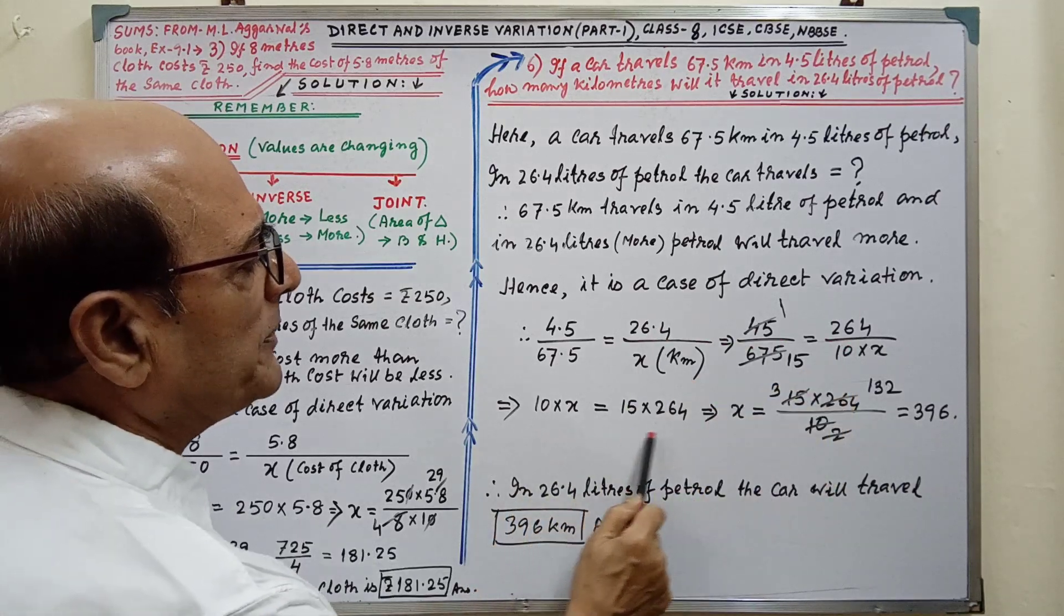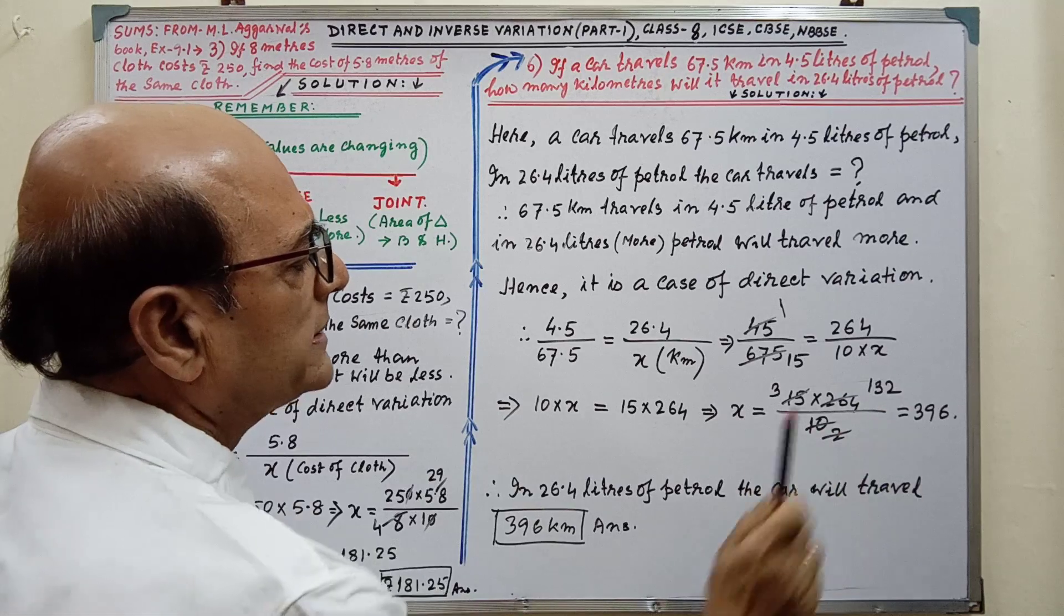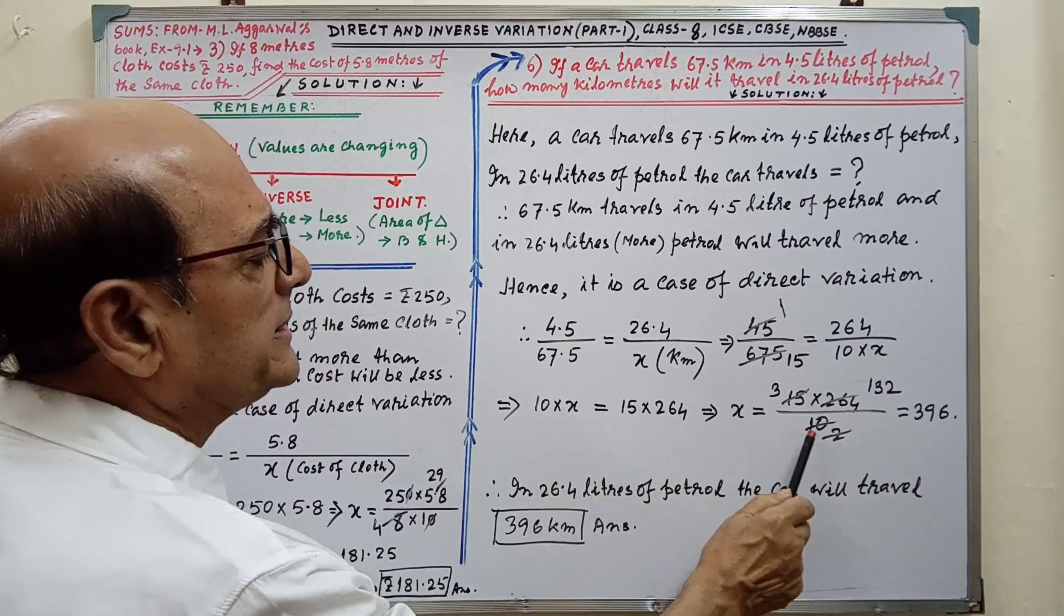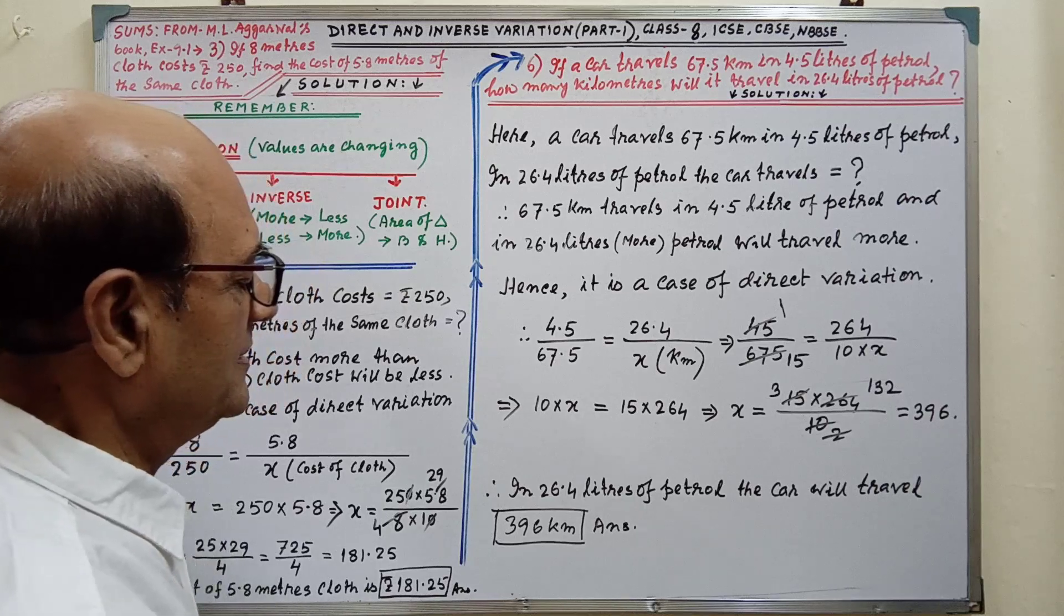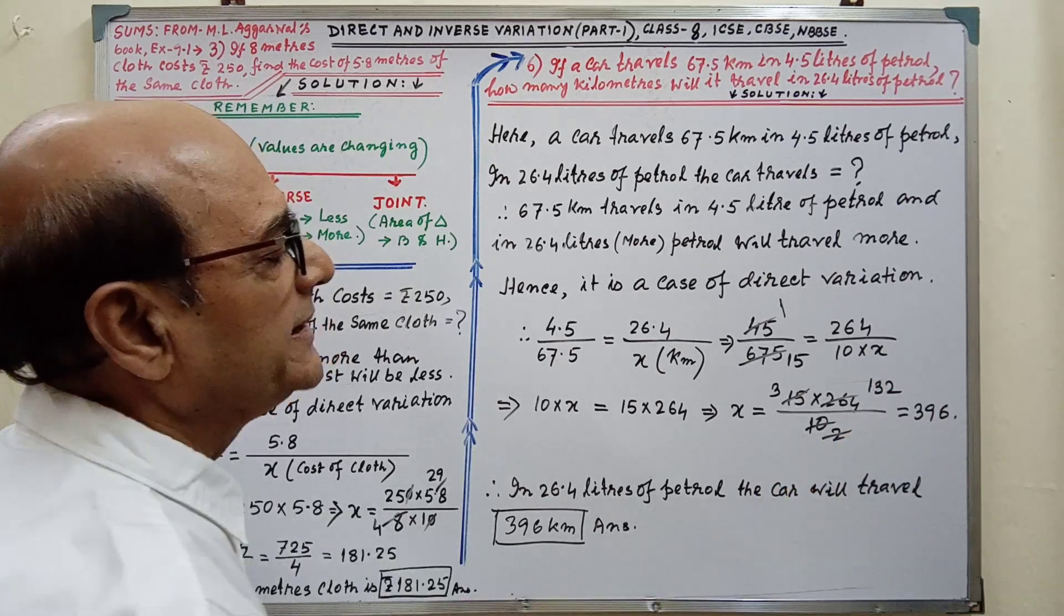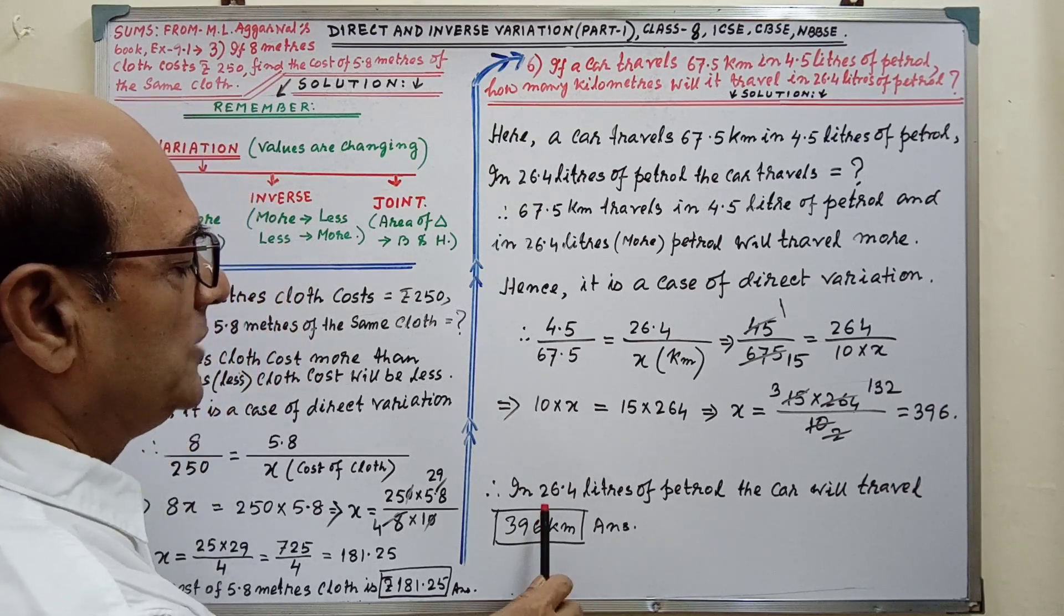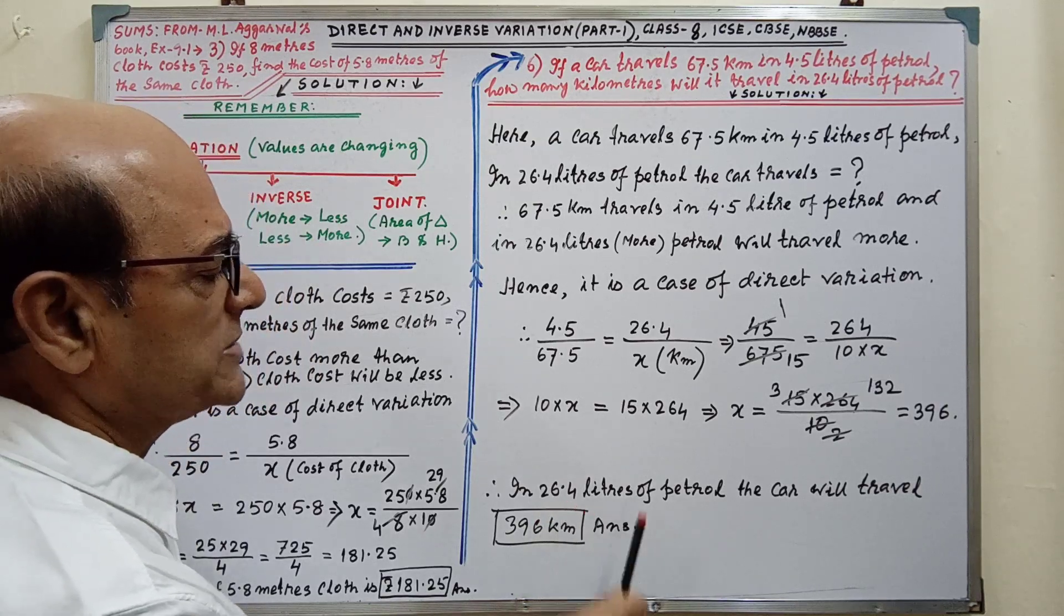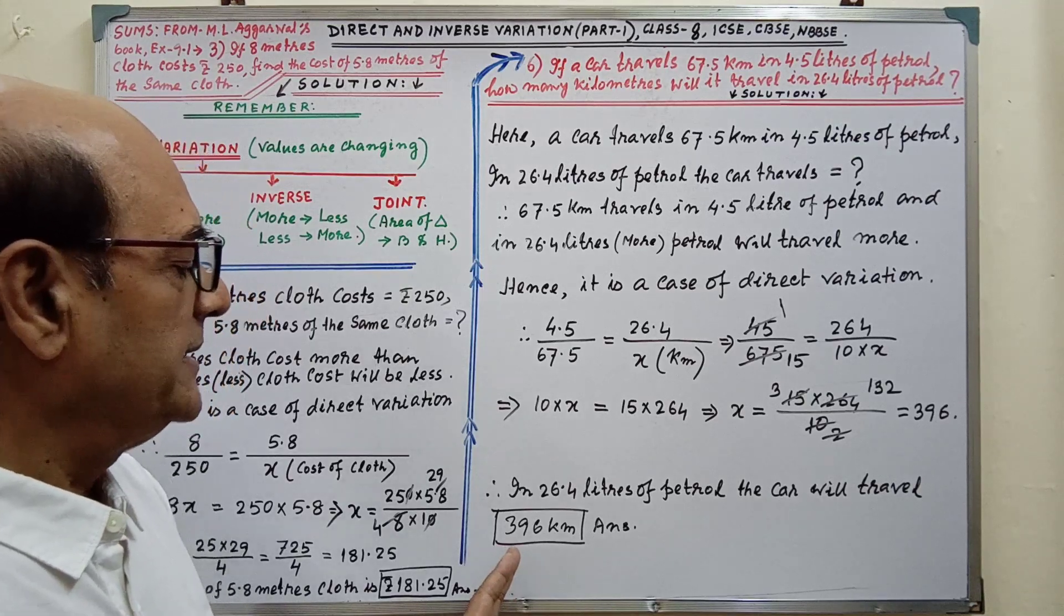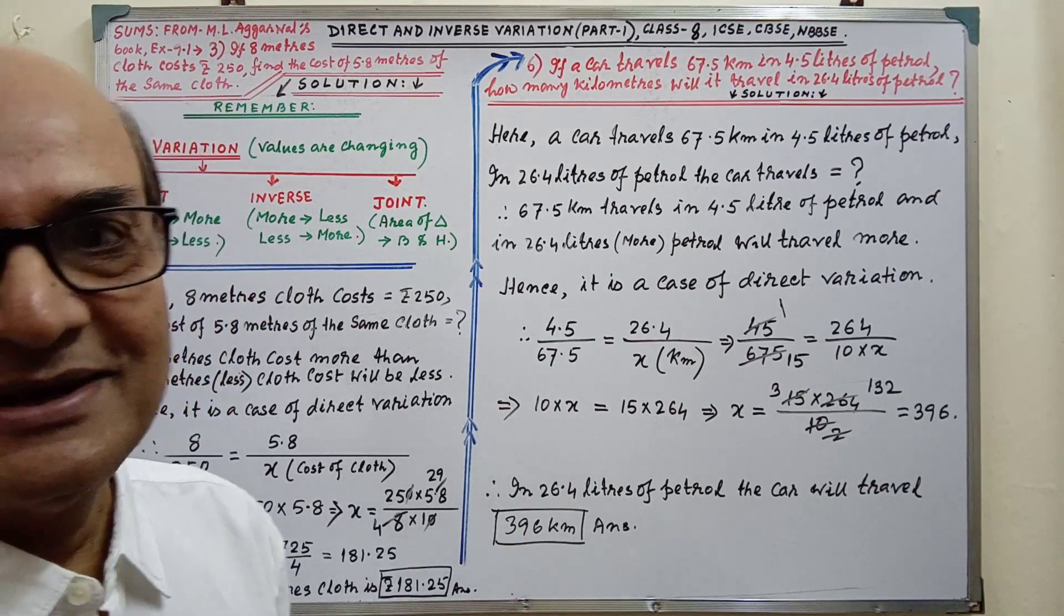Then, simplification, by following the steps attentively, easily you will understand. The value of X is coming 396. Therefore, in 26.4 liters of petrol, the car will travel 396 kilometers. This is the answer.